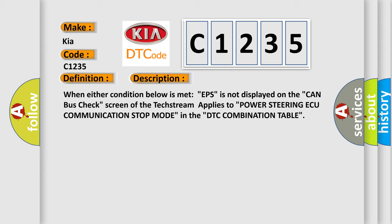When either condition below is met, EPS is not displayed on the CAN bus check screen of the text stream. This applies to power steering ECU communication stop mode in the DTC combination table.